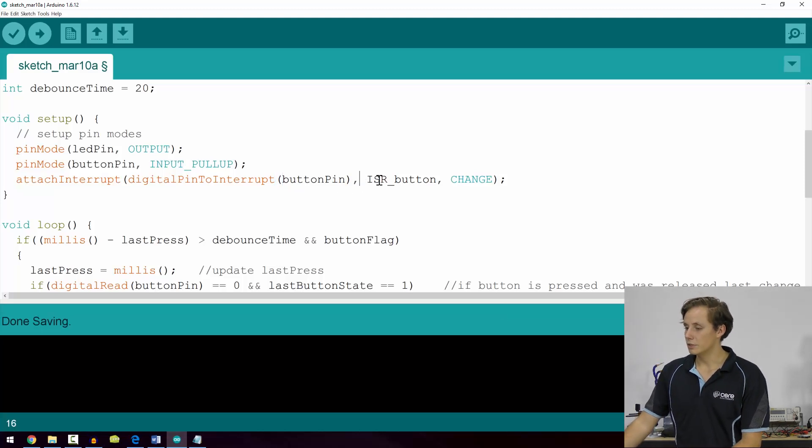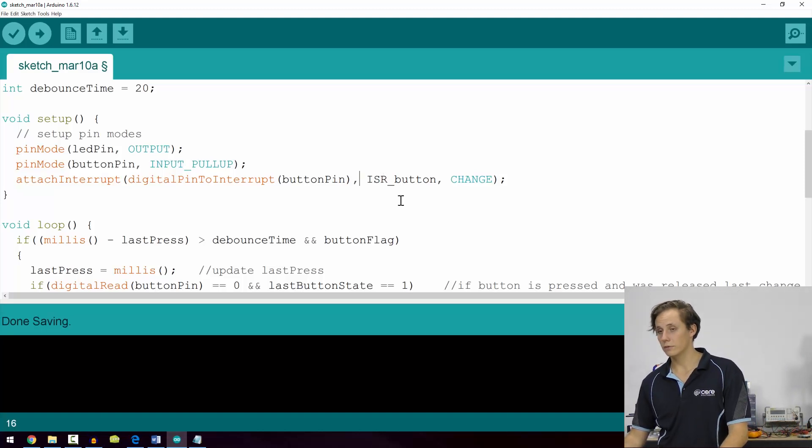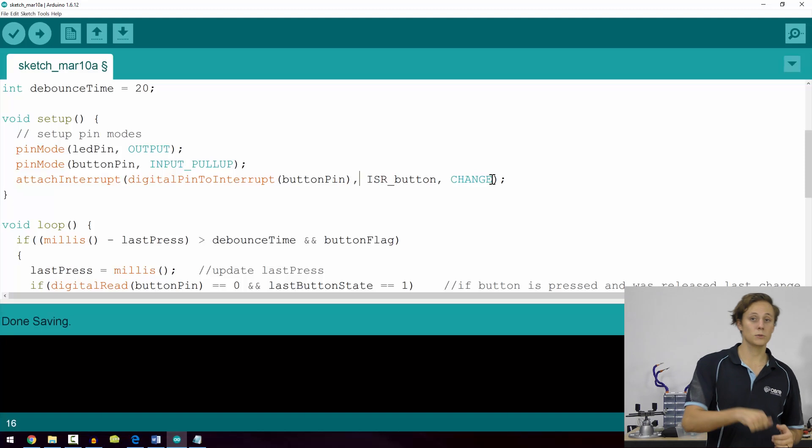Then a comma, and you declare the name of the function that you wish to run, so ISR underscore button is the general rule of thumb for declaring functions that you're running as ISRs. So interrupt service routine button, and then we want it to run on a change, meaning whether it transitions from a high to a low signal or from a low to a high signal and vice versa.